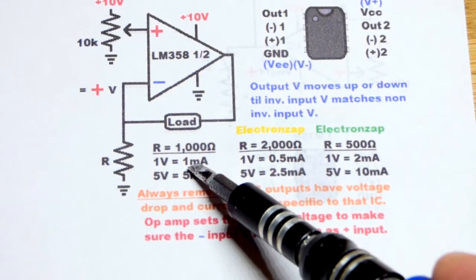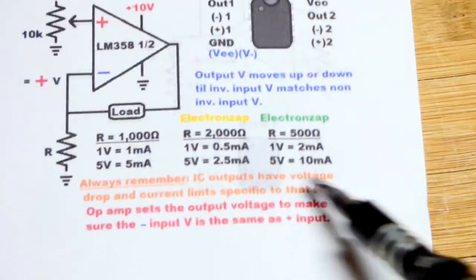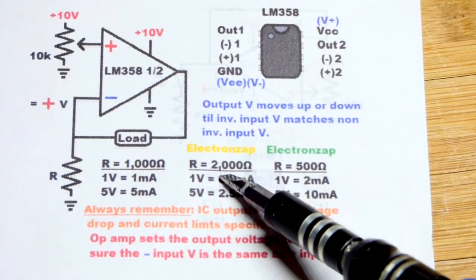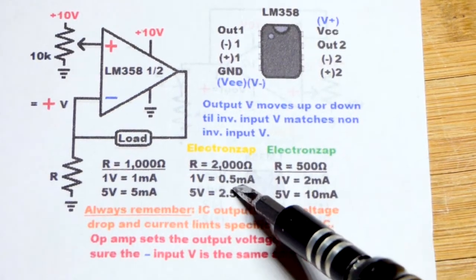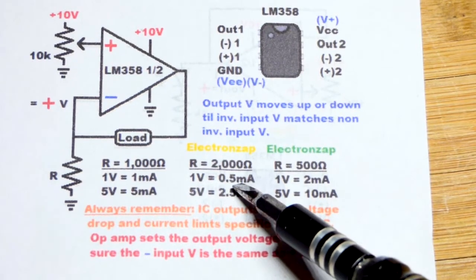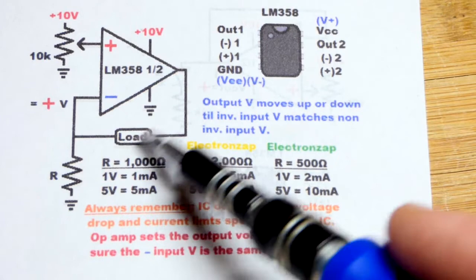If we set the trim pot to 1 volt we would get 1 milliamp of current because we're using a 1000 ohm resistor. If we used a 2000 ohm current setting resistor we would have got half the current, all things being equal. So 5 volts, we would have got 2.5 milliamps of current regardless of load.